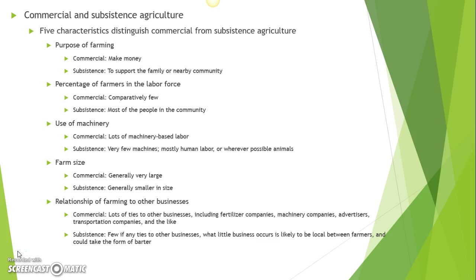When we're talking about commercial and subsistence agriculture, there are really five major characteristics that distinguish the two. The first of those characteristics is the purpose of the farming. Commercial farmers are always farming to make money — that's what the word 'commercial' means. Subsistence farmers, on the other hand, their goal is to support the family or at best the nearby community, and most of what gets produced gets eaten by the farmer's family.